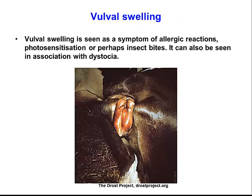Sometimes you'll see acute swelling of the vulva. This can be associated with allergic reactions — for example, after injecting a particular drug, you may see the cow shaking its ears, looking distressed, and rapid vulval swelling occurring. Other times it can be associated with photosensitisation or simply an insect bite. Particularly in black animals, this is a good area to look for signs of swelling when investigating photosensitisation.